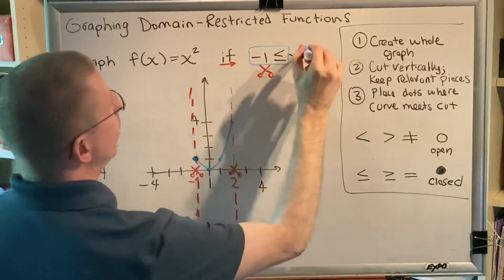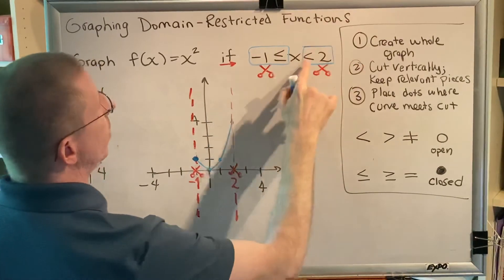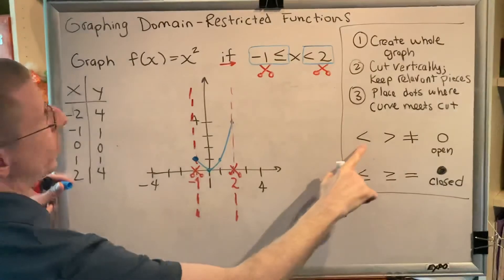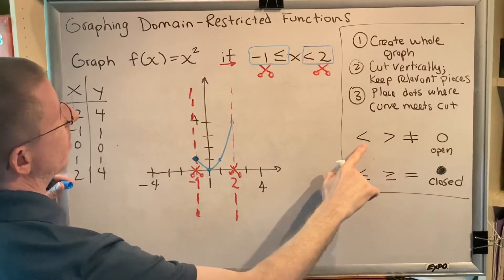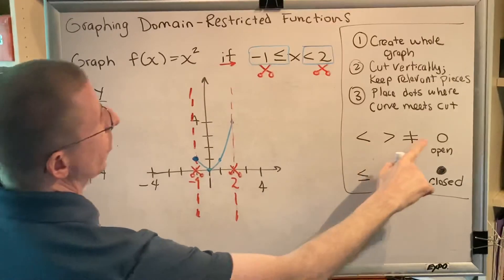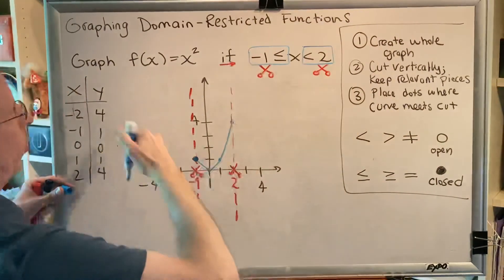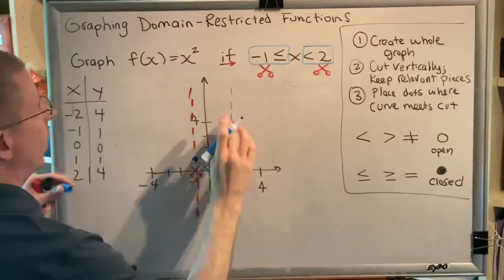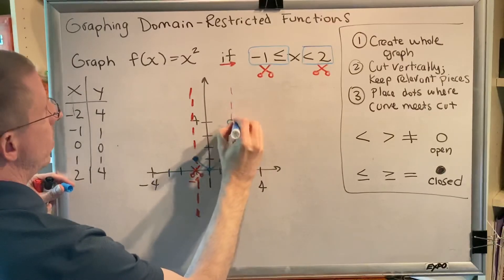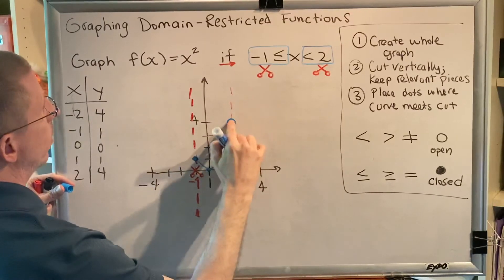The other value is 2. It's next to the inequality symbol less than, which is here. It is absent the equals concept. So this is going to be an open dot at 2, where the blue curve meets the red cut. So right here, we have an open dot on our graph.